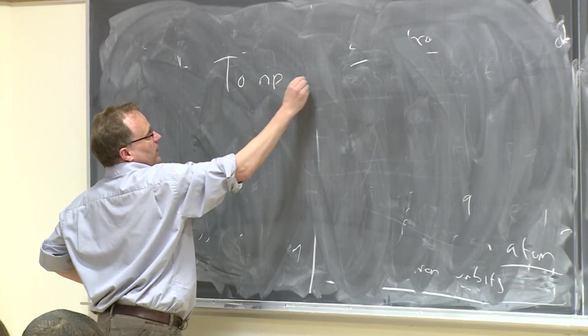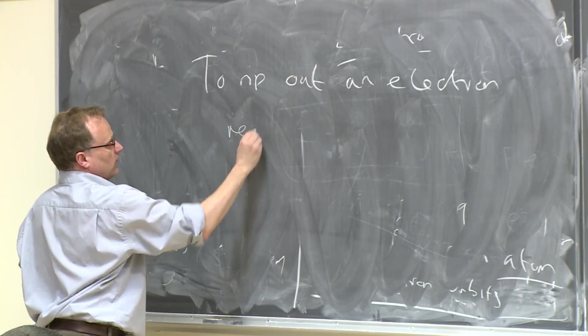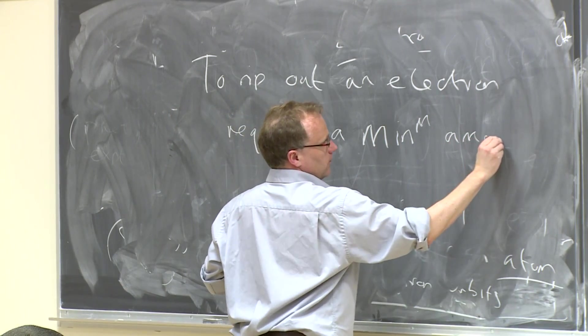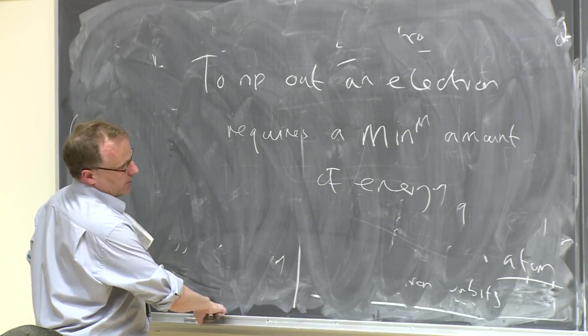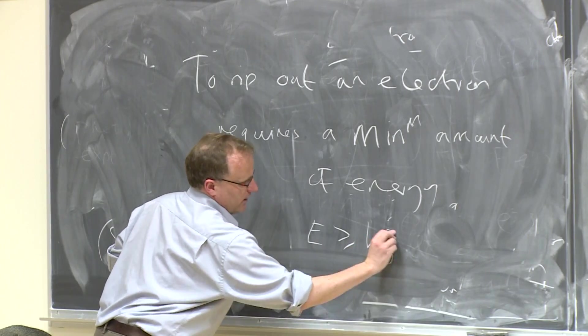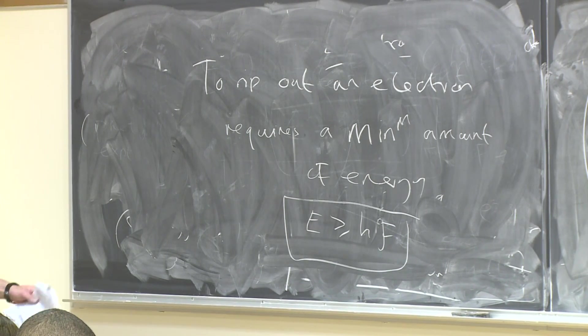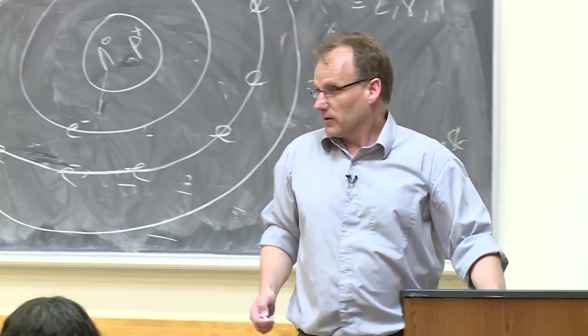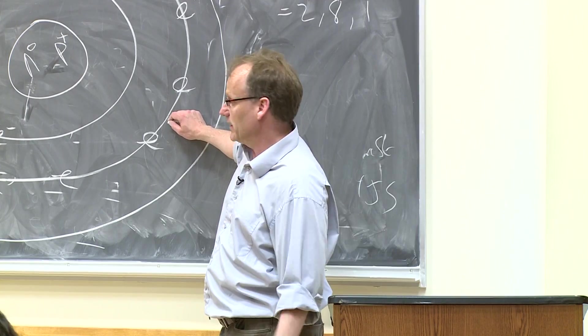That means to rip out an electron requires a minimum amount of energy. In other words, you need E to be greater than or equal to HF. And the energies of all these electrons around the atoms are quantized. This is chemistry. The reason why these electrons have these orbits is because they're only allowed to have certain energies. And this is because of quantum mechanics.